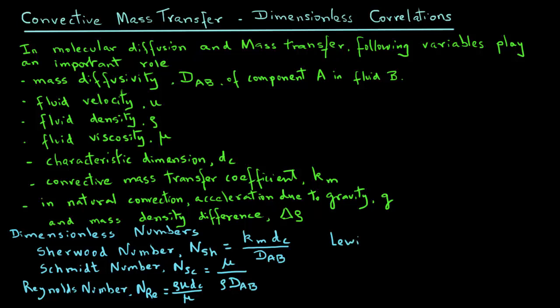There is another number that is also needed in mass transfer correlations, and that is called Lewis number, where we have the symbol NLe equals K over rho Cp times DAB. K is the thermal conductivity of the fluid, and Cp is the specific heat of the fluid.